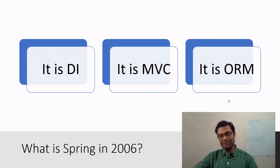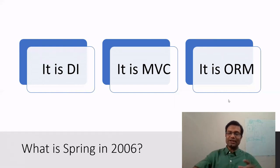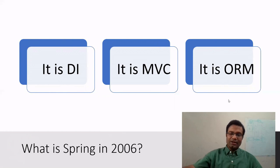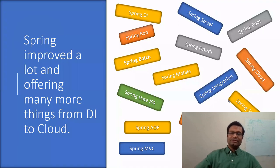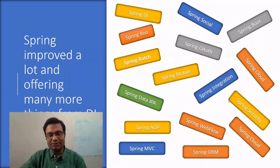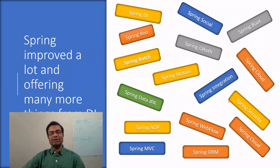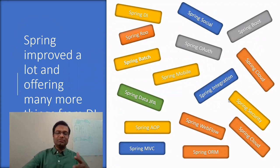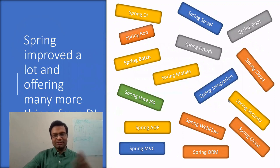So in 2006, Spring was limited to DI, MVC, and ORM. But over time, Spring was no longer limited to those. It became huge — it added many technologies, from MVC to cloud, social, JPA, mobile, and a lot more.